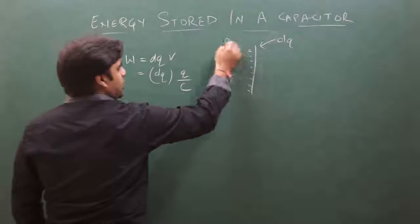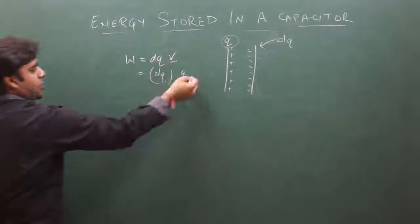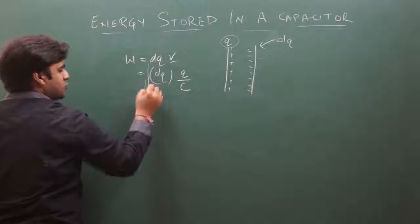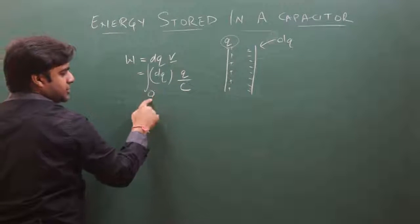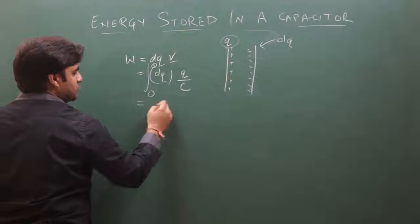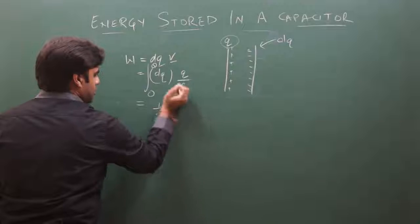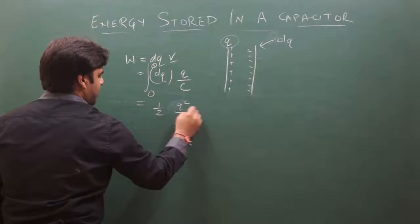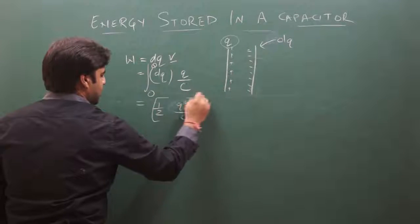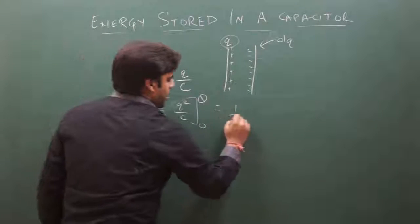Now we integrate this work from zero to Q. The total work done in charging the capacitor from zero to Q is: W equals the integral of V·dQ from 0 to Q, which gives us half Q squared by C.